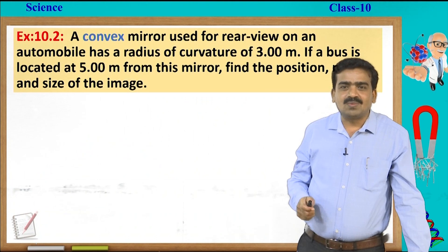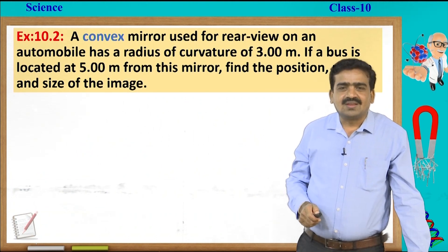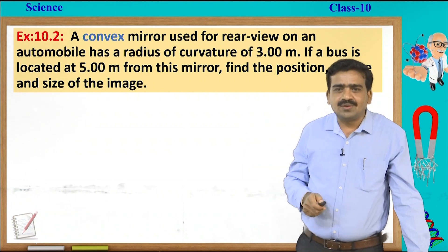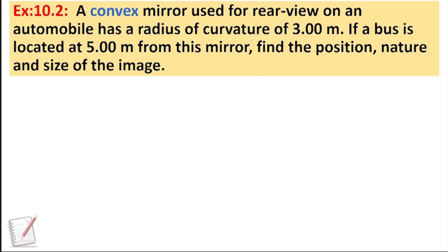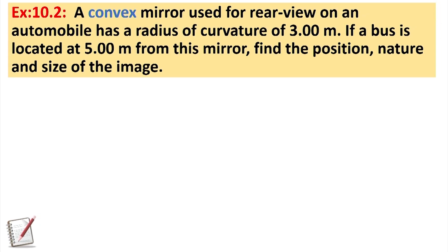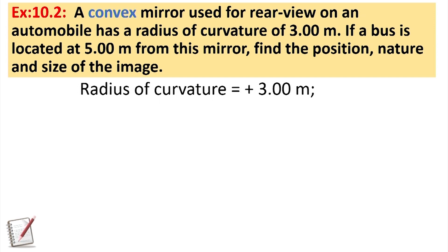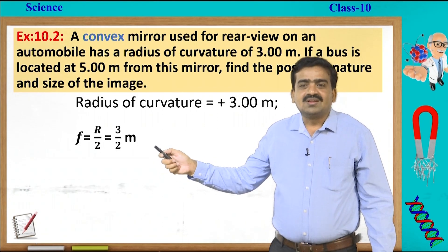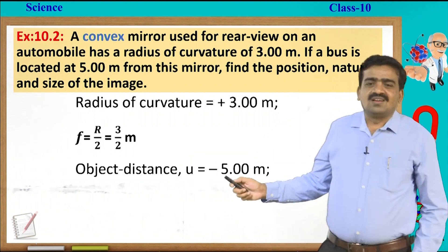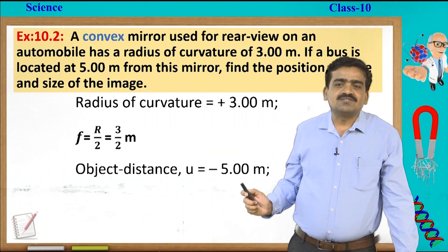Let us solve a problem based on convex mirror — Example 10.2. A convex mirror used for rear view on an automobile has a radius of curvature 3.00 metres. If a bus is located at 5.00 metres from this mirror, find the position, nature and size of the image. Writing the data: radius of curvature is given, so we convert to focal length — f = R/2 = 3/2 metres. Object distance u = −5.0 metres.